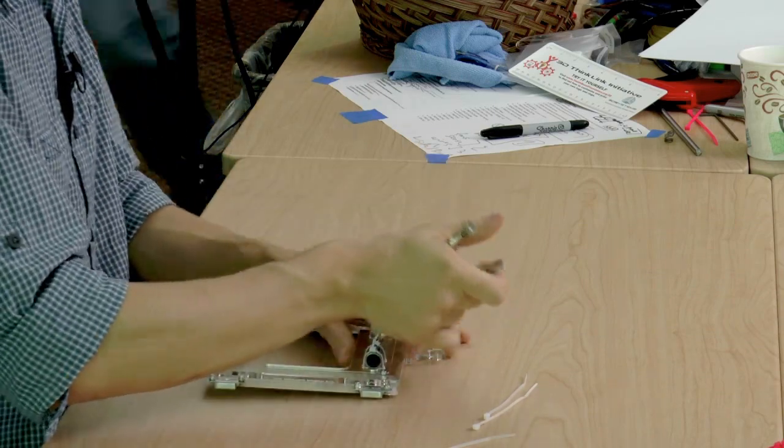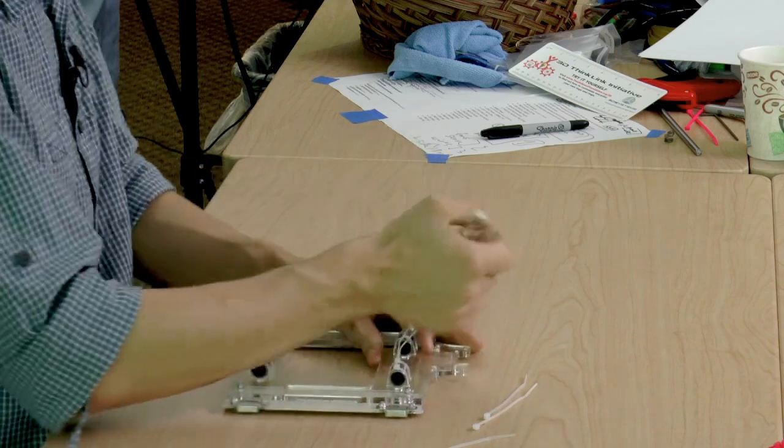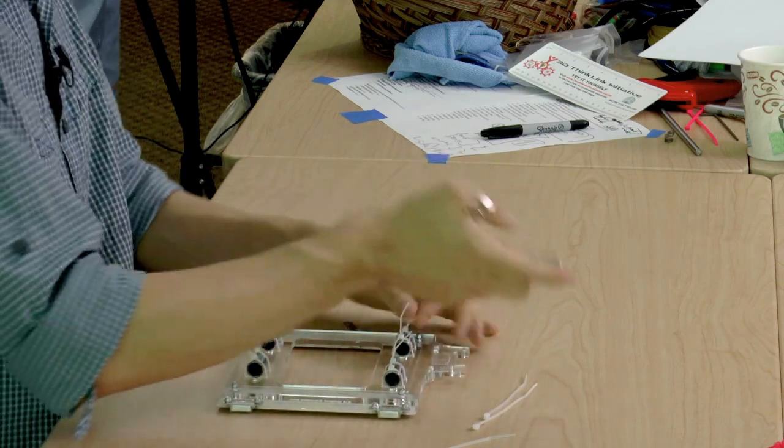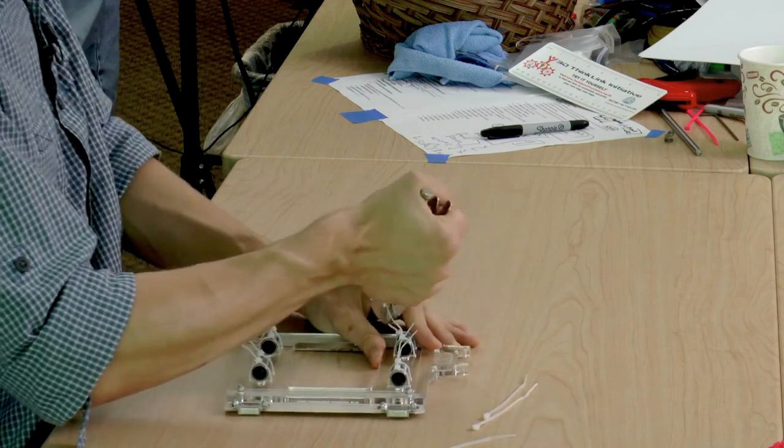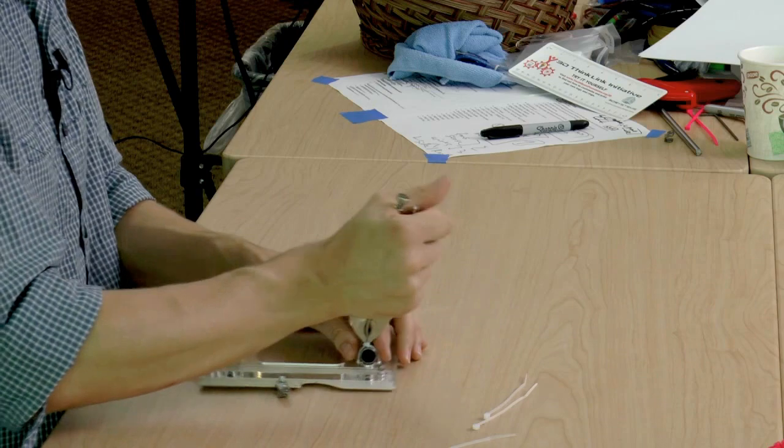Now, you want these zip ties tight, but they don't have to be crazy, crazy tight. On the X assembly, as we're putting together, it really made a difference. You want it as tight as possible. Here, just normally tight, you don't have to fret about it.